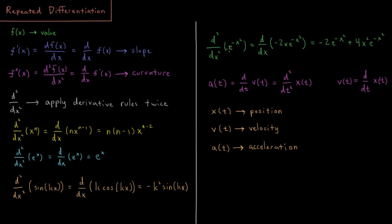So something where we have to use the chain rule: if we take the second derivative of e^(−x²), the first derivative of that by the chain rule would be −2x·e^(−x²). So taking the derivative again, now we have to use the product rule on −2x and e^(−x²). We get as the result: −2·e^(−x²) plus 4x²·e^(−x²).